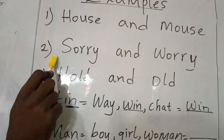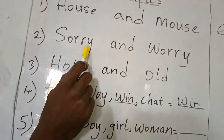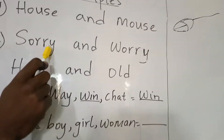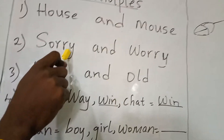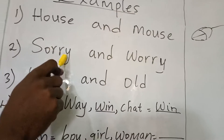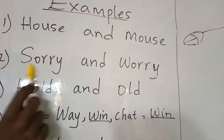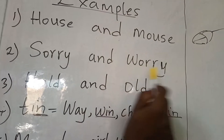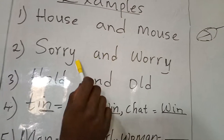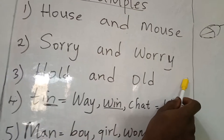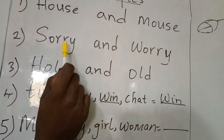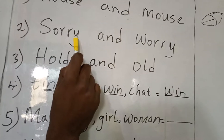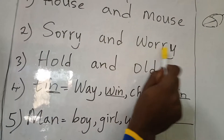Example 2: sorry and worry. When you do something wrong to someone, you tell the person 'I am sorry.' And worried. The sound is the same at the end — sorry, worry.